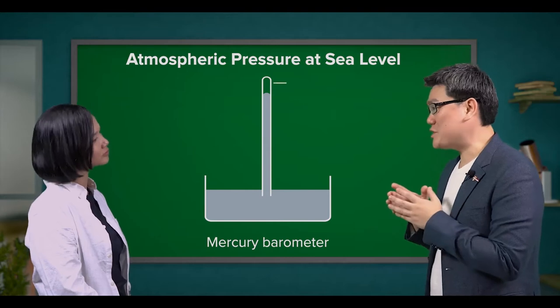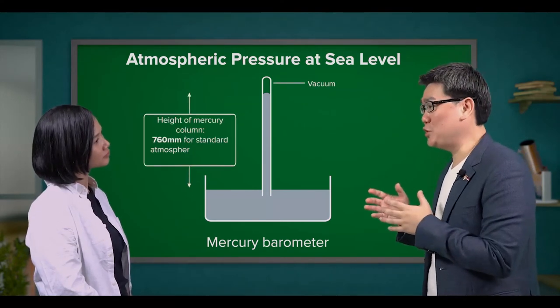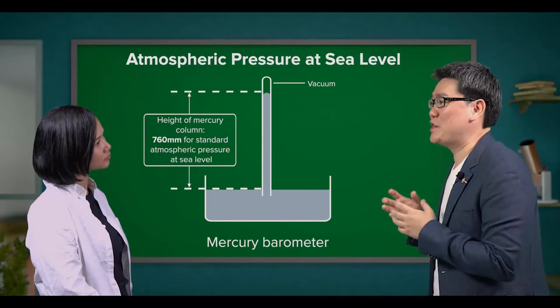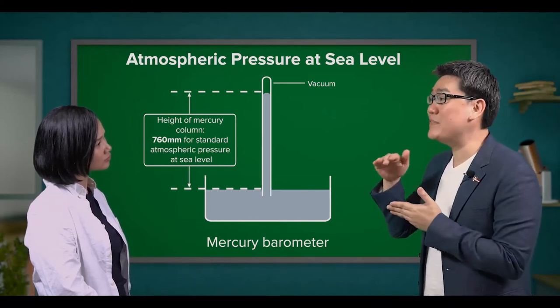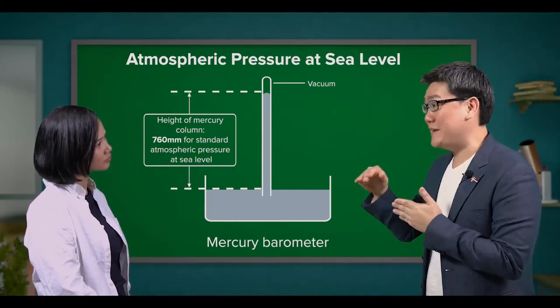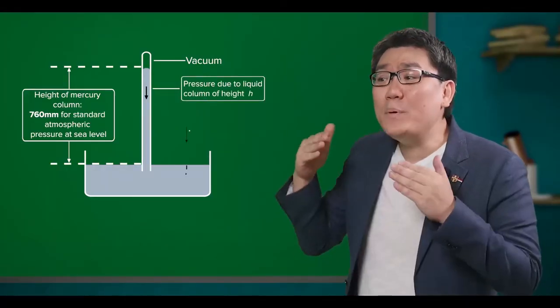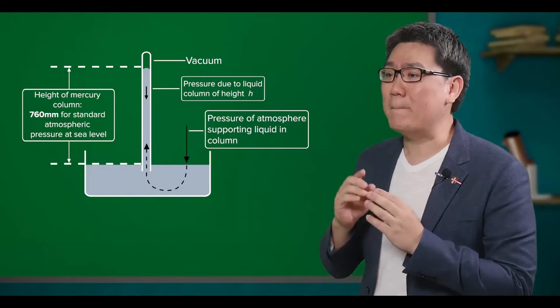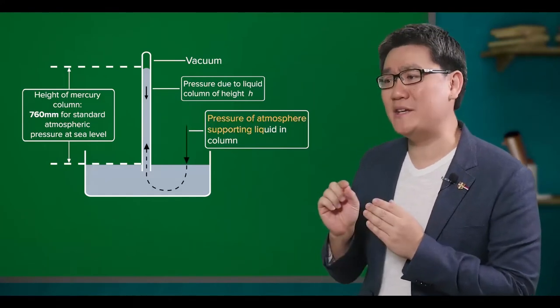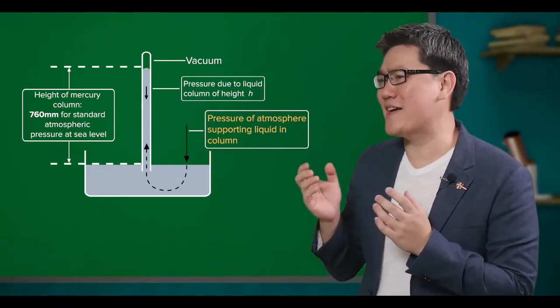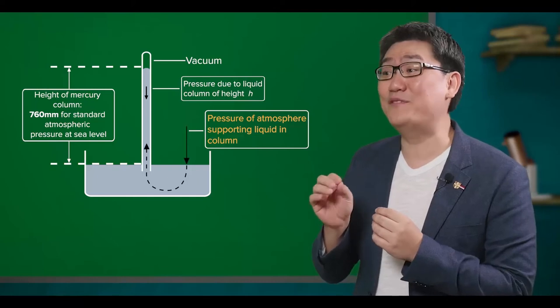The pressure due to the mercury in the tube is equivalent to the atmospheric pressure exerted on the surface of the mercury at the basin. The atmospheric pressure pushes the mercury back up the tube, creating an equilibrium and thus giving us the reading of the air pressure.